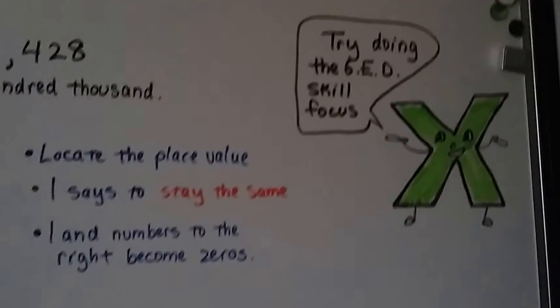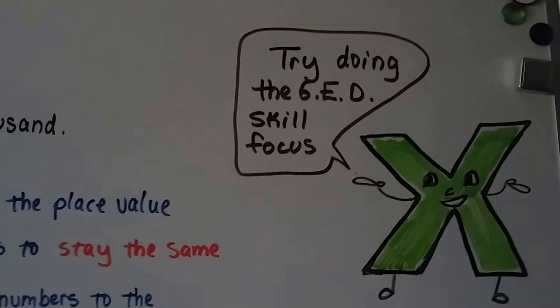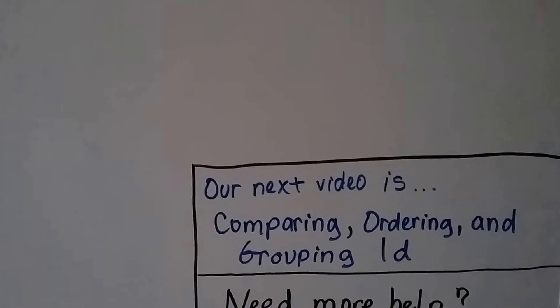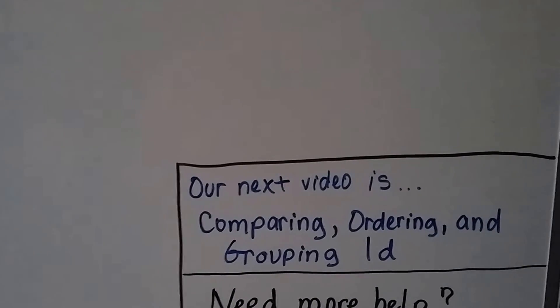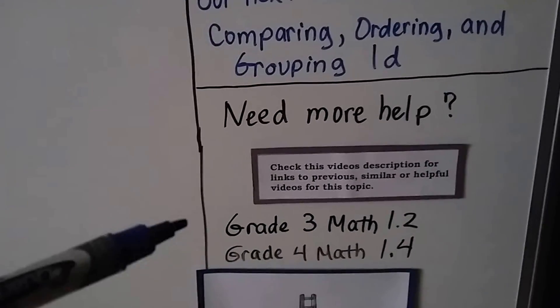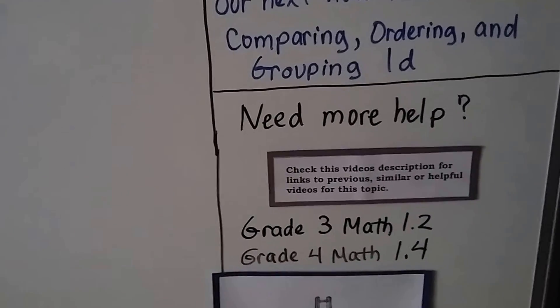Now you can try doing the GED skill focus questions that are on page 35 and see how you do. Our next video is comparing, ordering, and grouping. It's going to be lesson 1D. If you need more help with this topic, there's going to be links to grade 3 math 1.2 and grade 4 math 1.4.